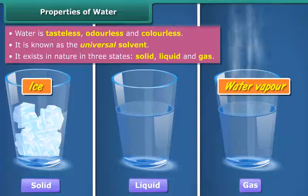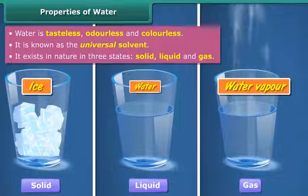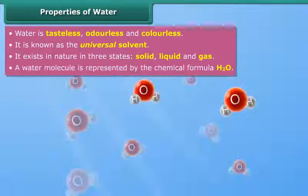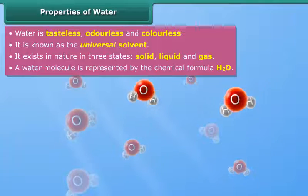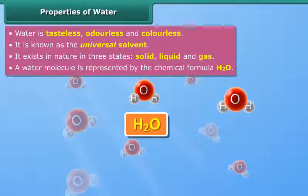The most common form that water takes is liquid form, and it is in this form that it is simply known as water. A water molecule is made up of two hydrogen atoms and one oxygen atom, which is why water is represented by the chemical formula H₂O.